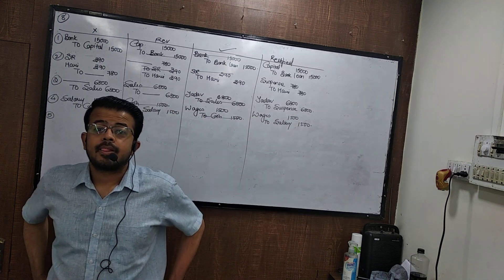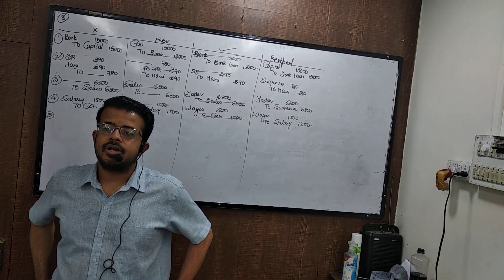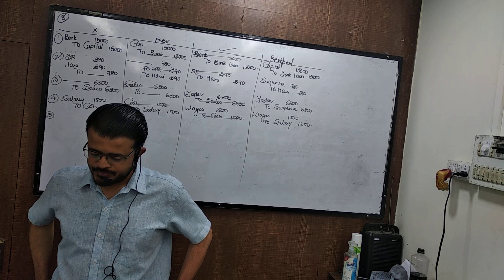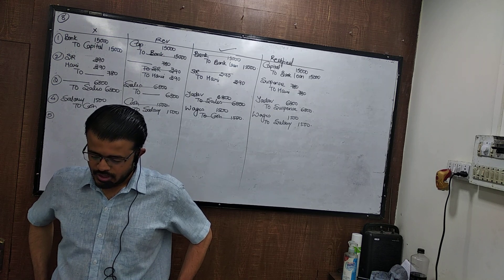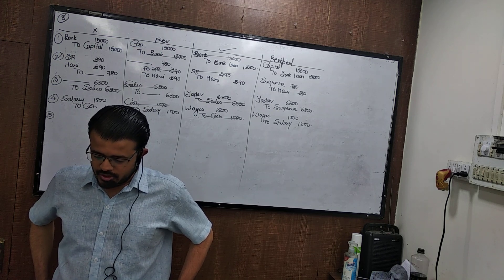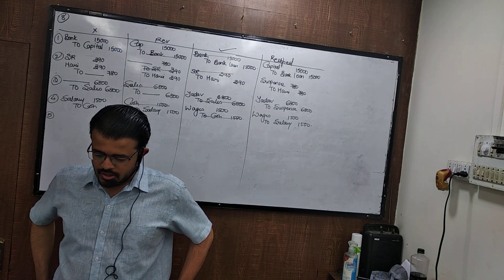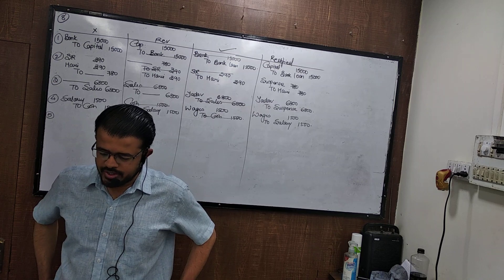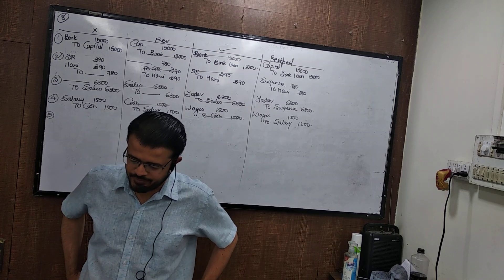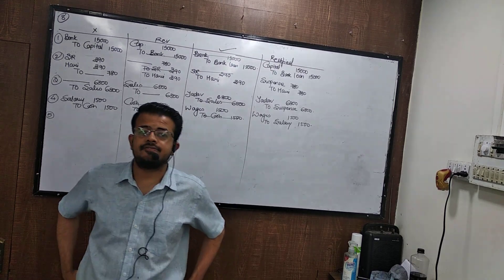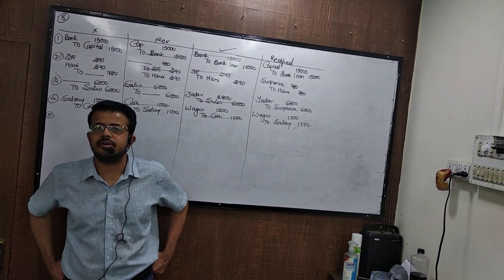Fourth one: received interest was credited to rent account, 500. The correct entry is cash to interest. Wrong entry is cash to rent. Reverse is rent to cash, and rectified is rent to interest. This is an error of commission.